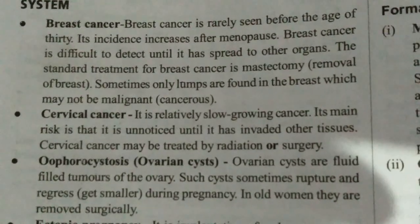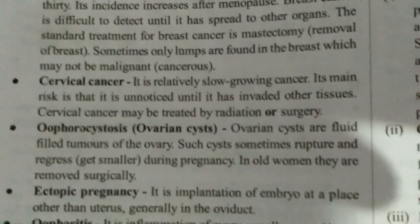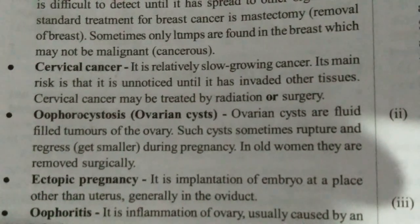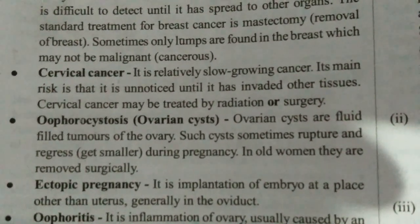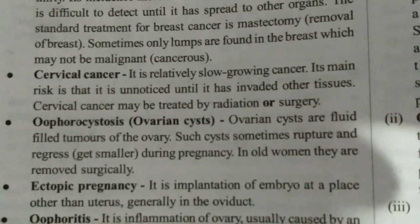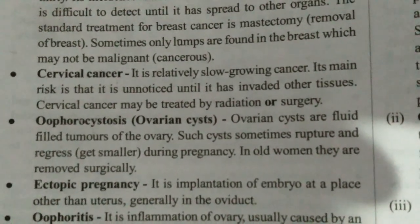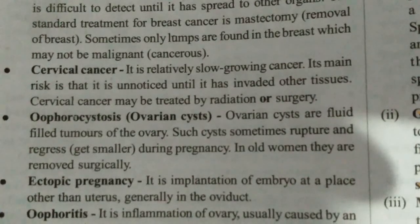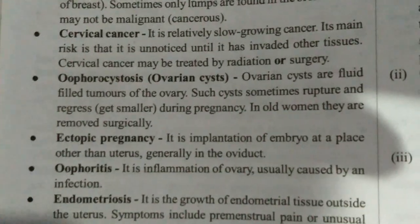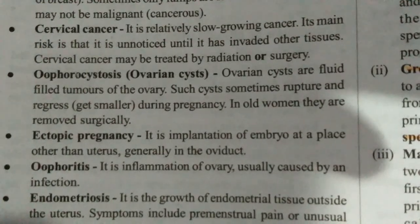The standard treatment for breast cancer is the removal of the breast, known as mastectomy. The second disorder is cervical cancer — it is a slow-growing cancer of the cervix, which is the lower part of the uterus. It similarly remains unnoticed until it involves other tissues, and is usually treated with surgery or radiation.